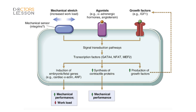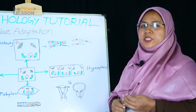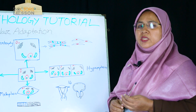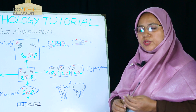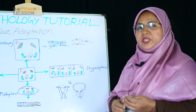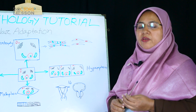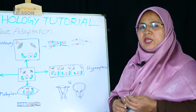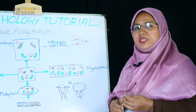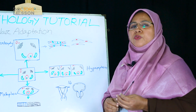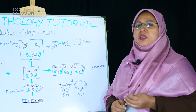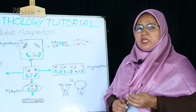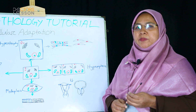These transcription factors work coordinately to increase cellular protein synthesis. Sometimes this leads to pathologic conditions like cardiac arrhythmia, heart failure, and even sudden death. To prevent these harmful consequences, various drugs are on clinical trial to prevent these nuclear transcription factors which cause hypertrophy of cardiac muscle. Hypertrophy may be physiological or pathological in type.